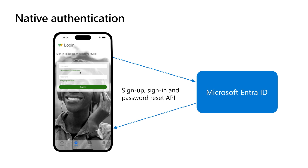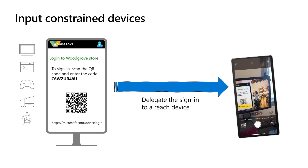To sign up or sign in users without any pop-up windows — we have a separate video that describes the native authentication flows in detail. Applications for input-constrained devices are also known as browserless or headless devices. For these devices, screens or monitors are limited to text only — for example, smart TVs, IoT devices, robots, gaming consoles, printers, or even command lines.